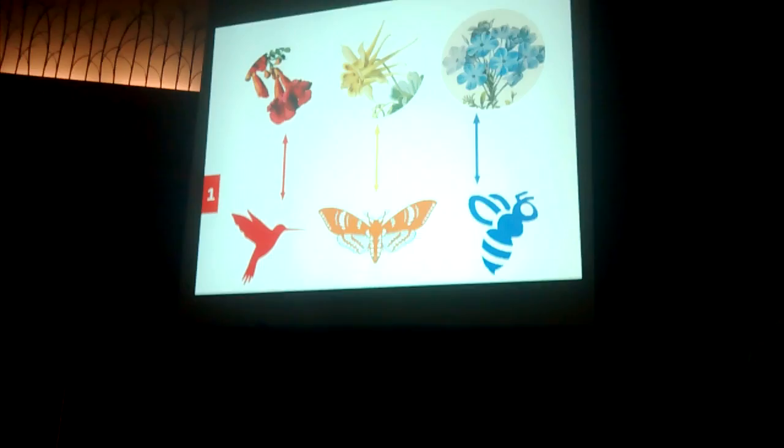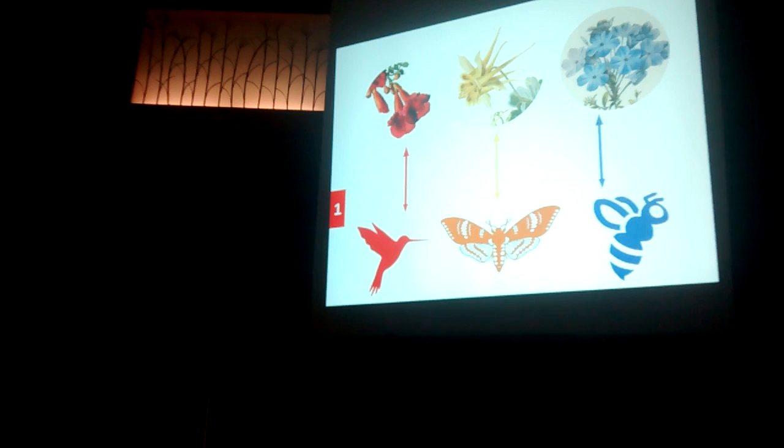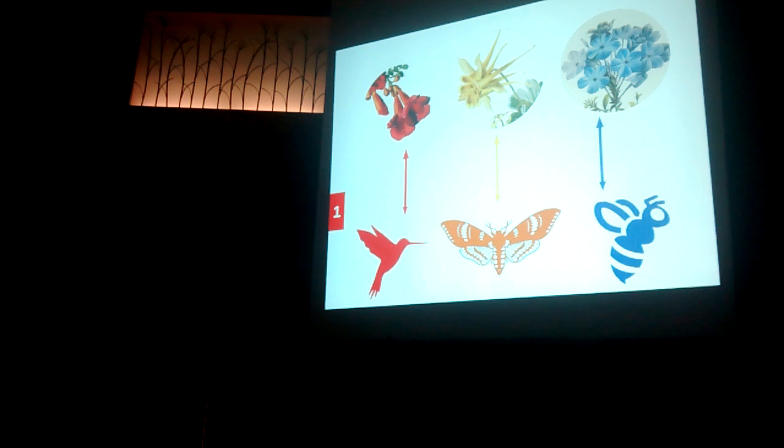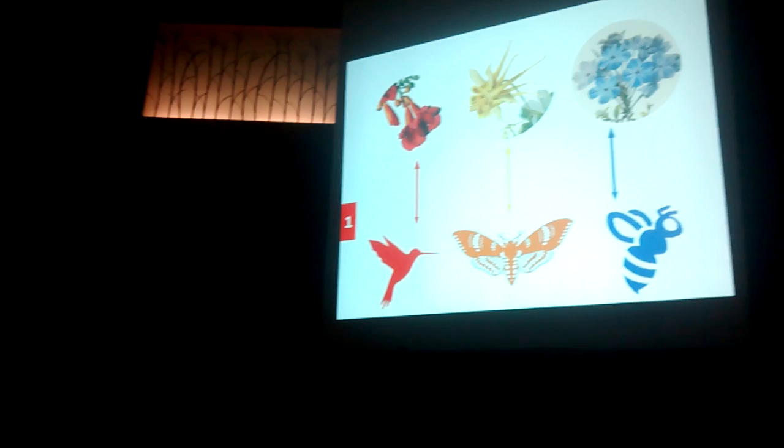Traditionally, pollinators have been seen as the driver of angiosperm evolution, and it's why we accept that some features of angiosperms, such as the role of shape, adapt to pollinators in order to optimize pollen transfer. However, the exact role of pollinators is not always easy to understand in this context, mainly due to two reasons.